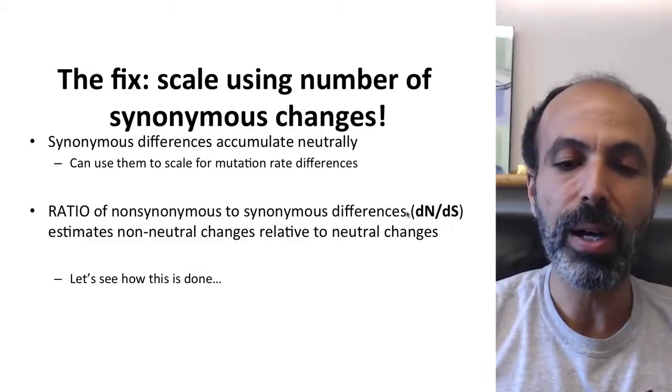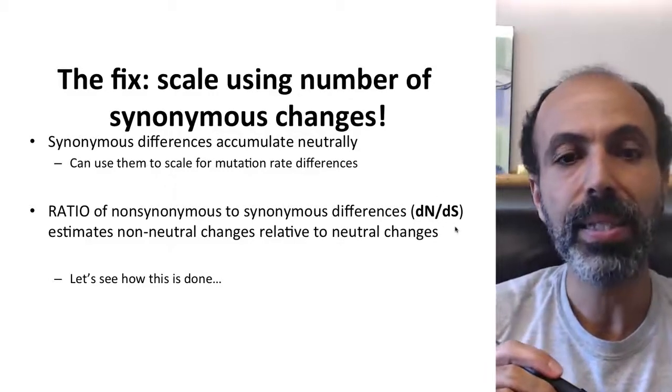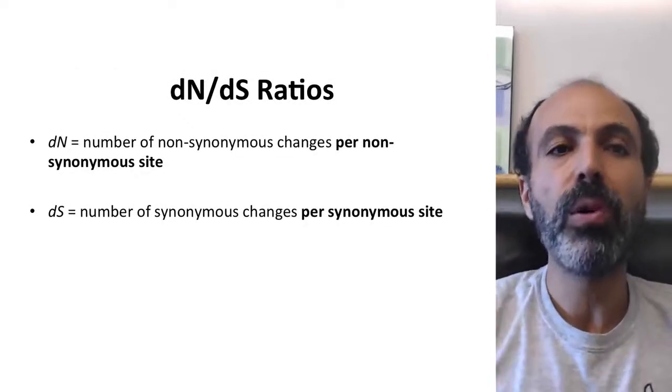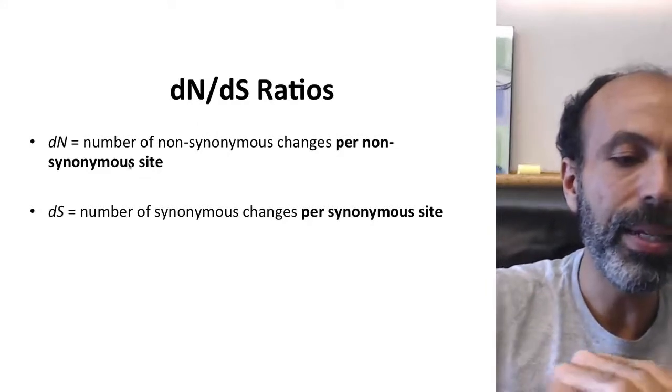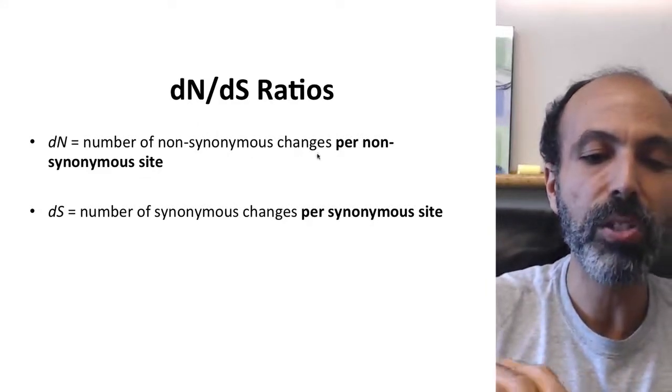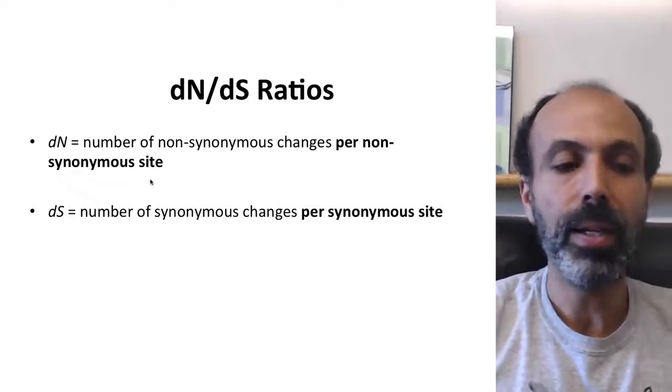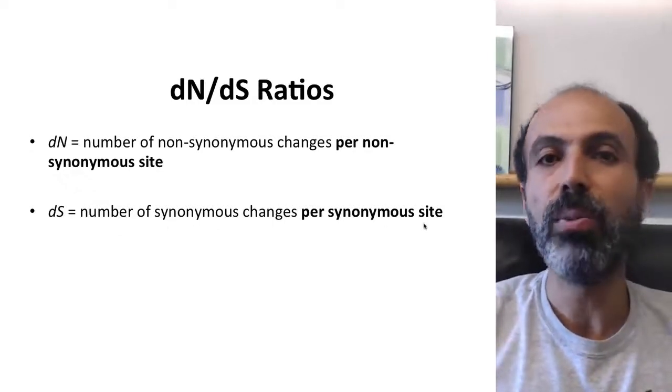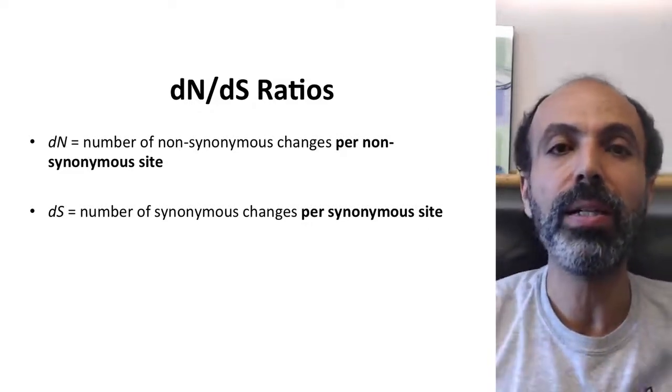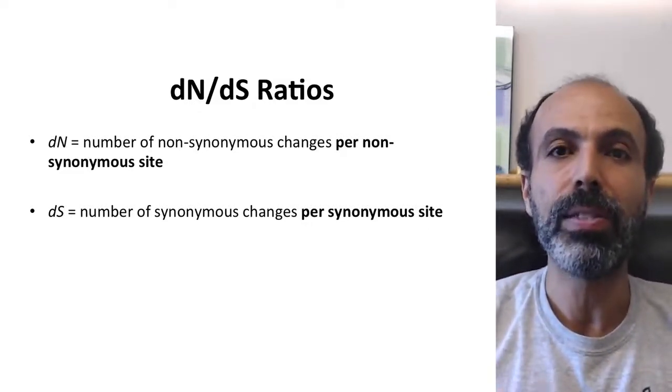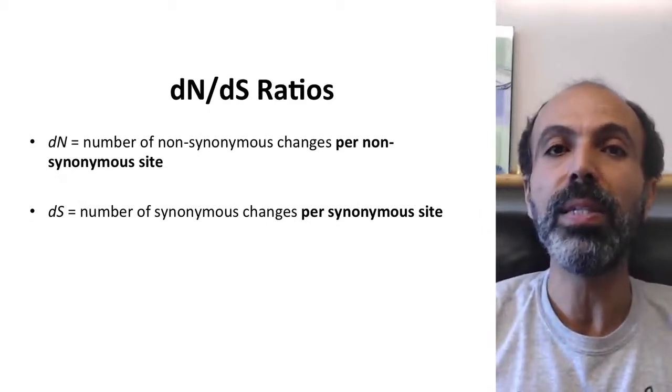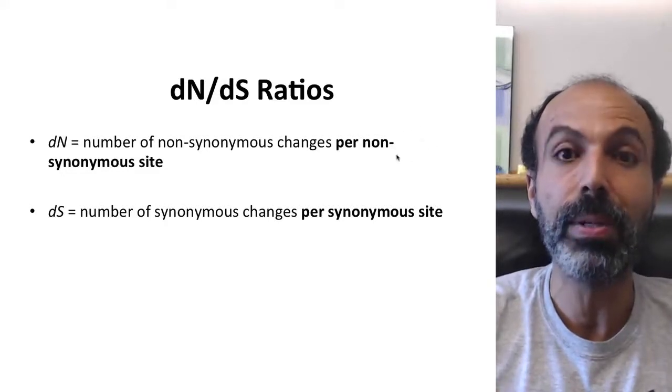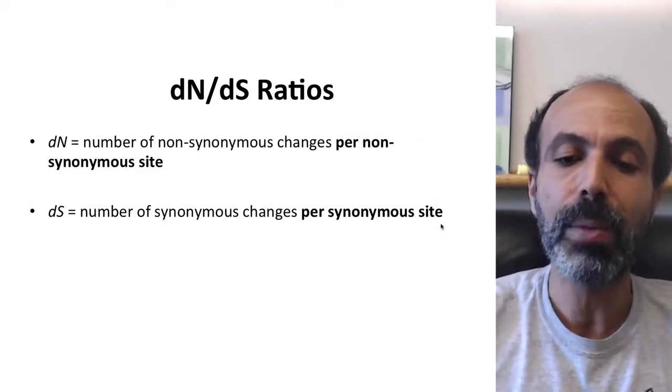Specifically in this case, we'll focus on the measure referred to as dN over dS. Now, these are not just number of non-synonymous differences, but dN is the number of non-synonymous changes per non-synonymous site. You may remember I mentioned that the second position of every codon is always non-synonymous. So there's no opportunity for any change there to be synonymous. So we have to use this kind of extra scaling even within our measures of what's happening in terms of non-synonymous and what's happening in terms of synonymous.